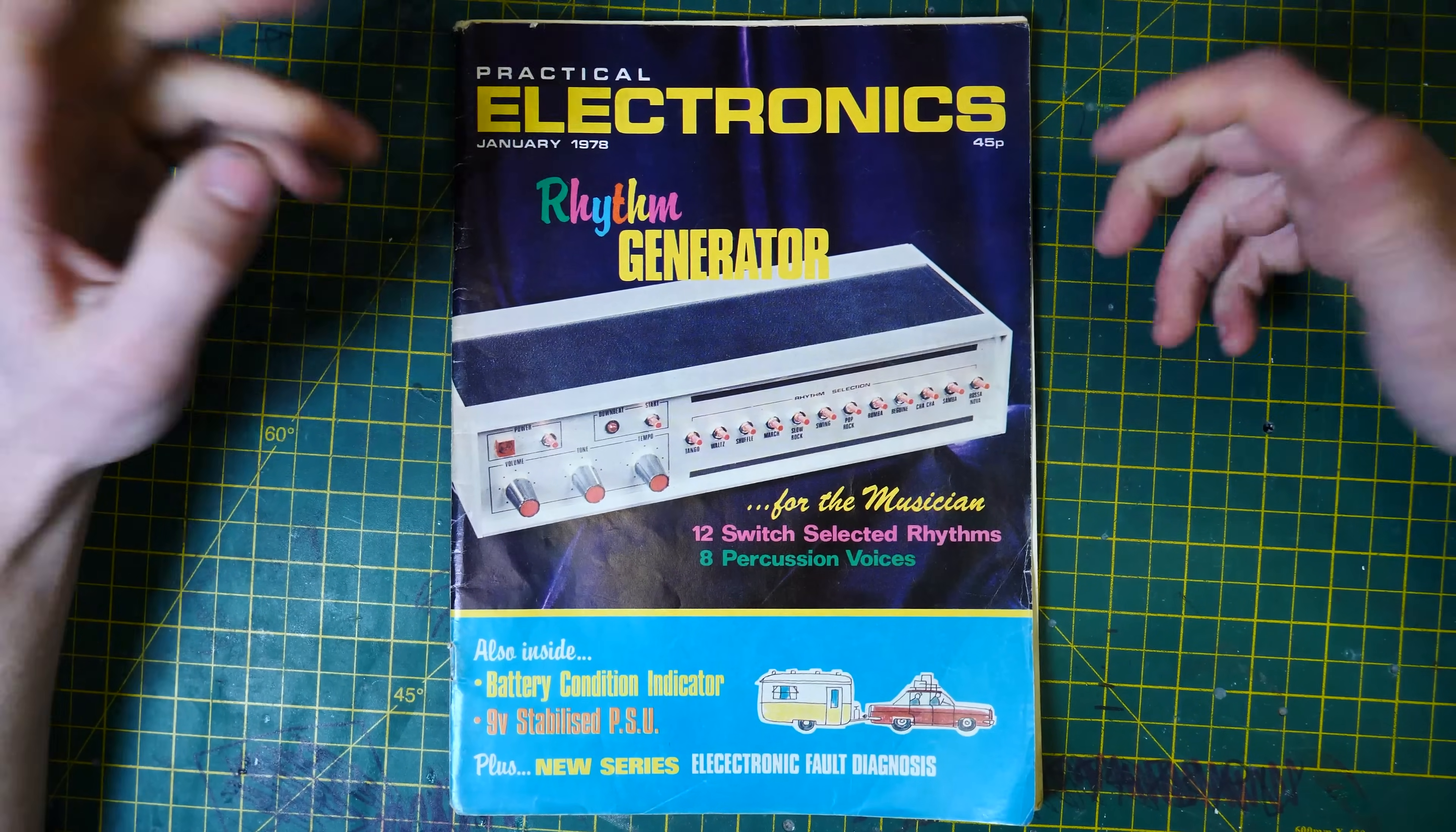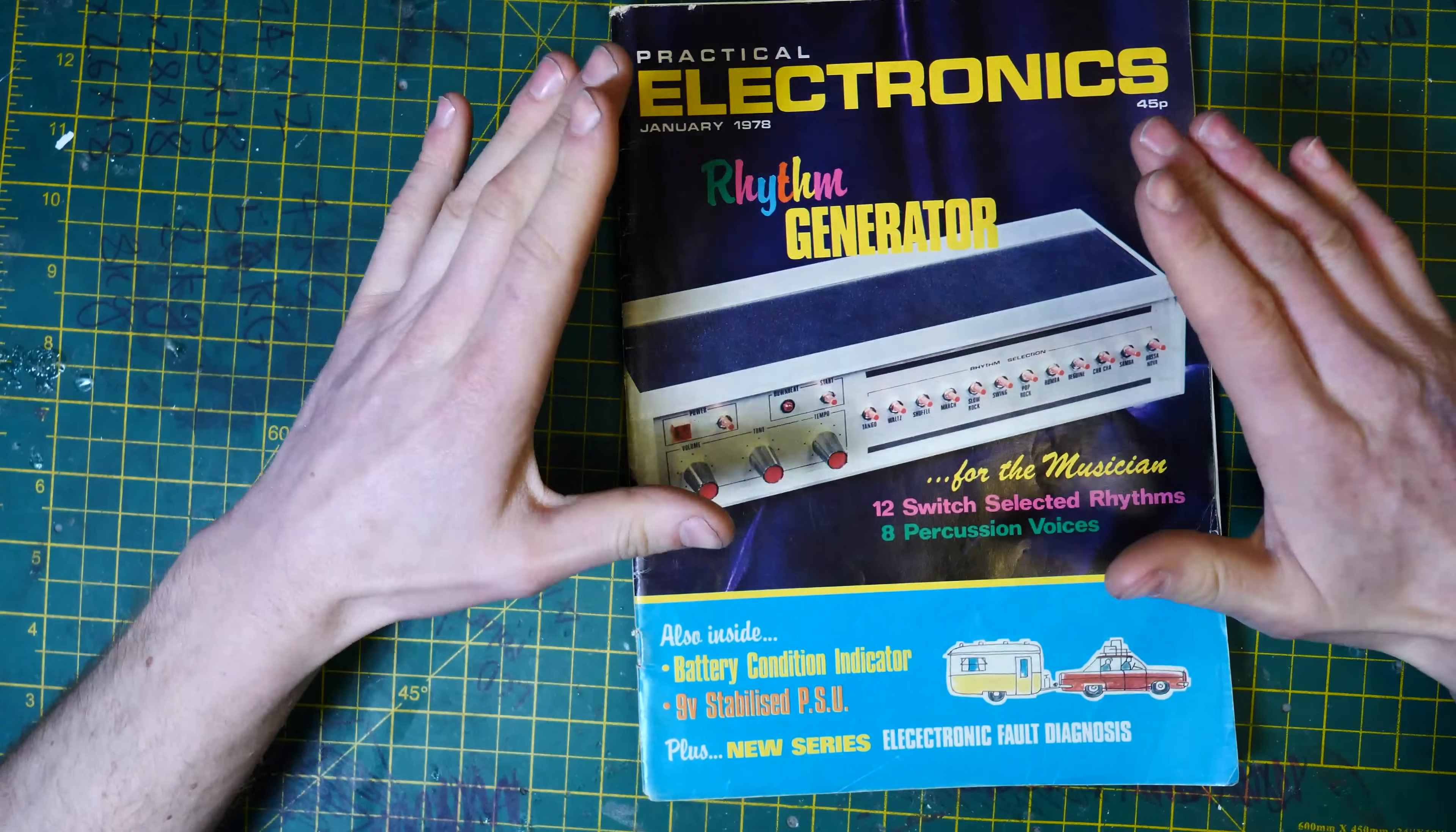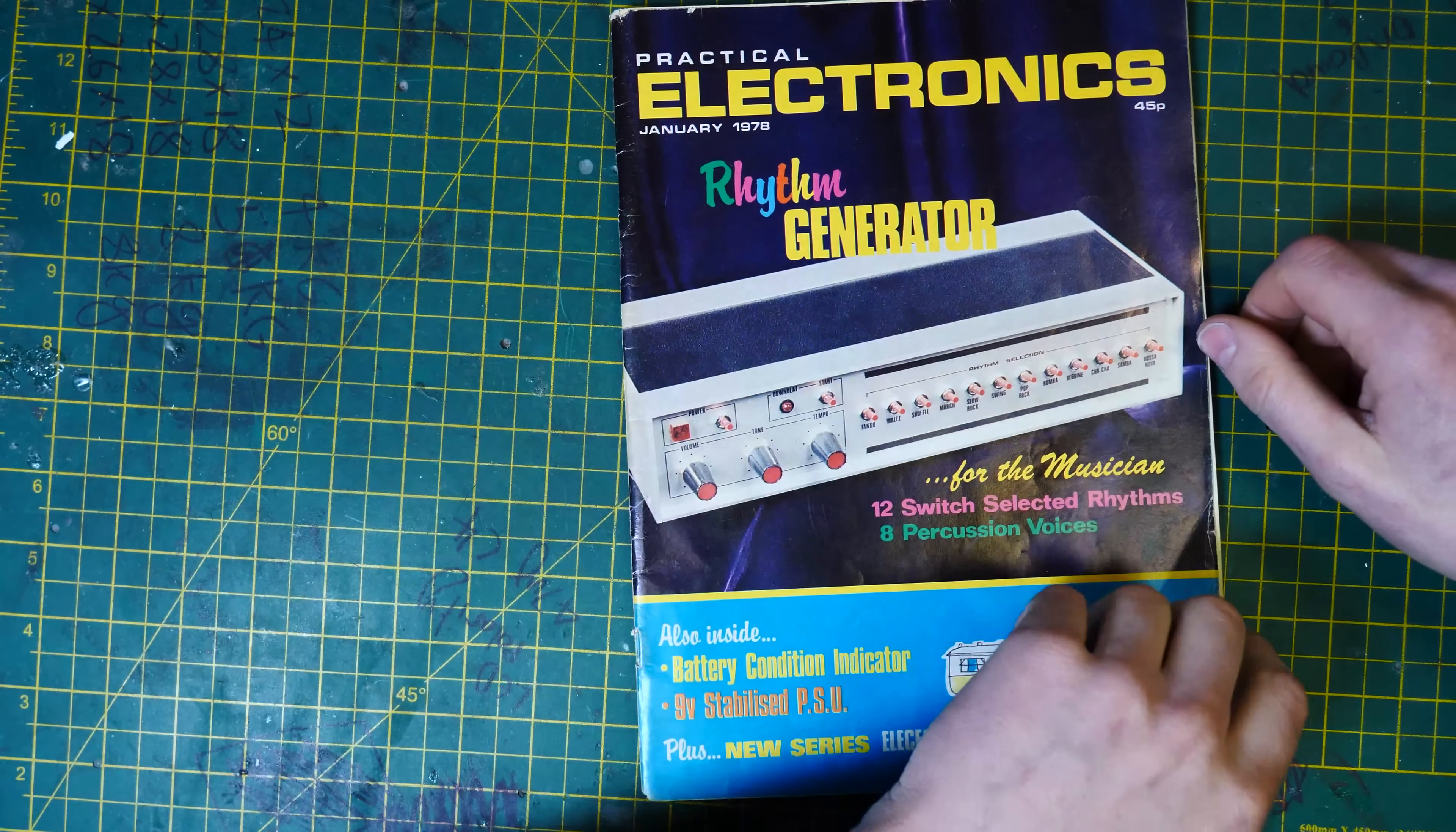Where were you in 1978, January? What was going on? Anyway, the reason why we're looking at this magazine in particular is, well, it's right in front of you. It's the Rhythm Generator. And yes, this is going to be pretty damn interesting.